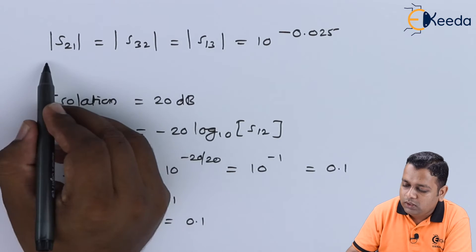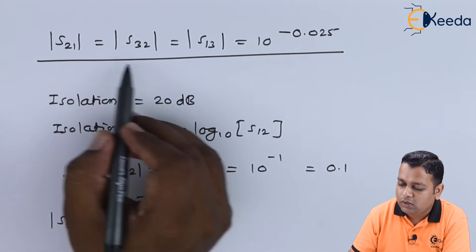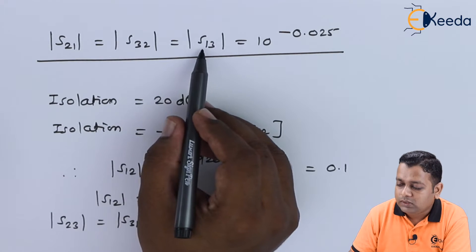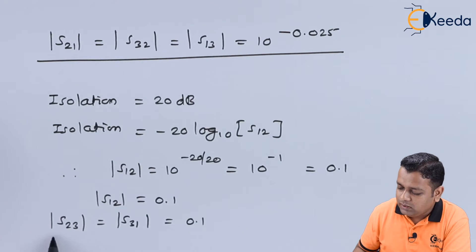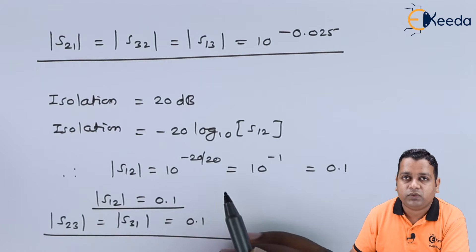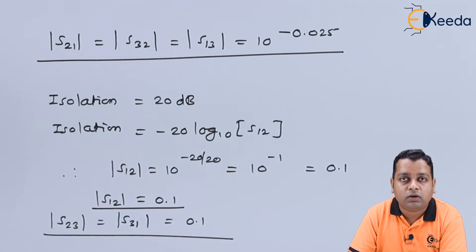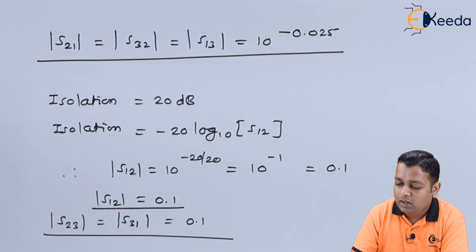We have now derived six scattering parameters: s21 (row 2, col 1), s32 (row 3, col 2), s13 (row 1, col 3), s23 (row 2, col 3), s31 (row 3, col 1), and s12 (row 1, col 2). The scattering matrix is 3×3 with nine total parameters, and we now have six answers. We move on to use the VSWR value to find the remaining three.